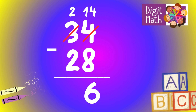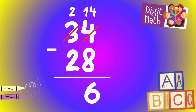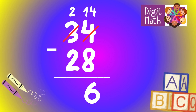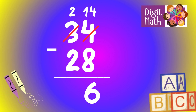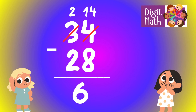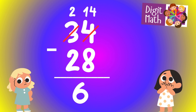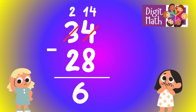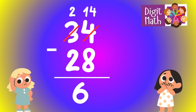In the tens column, we now have 2. Subtract 2 from 2, which equals 0. So the final result is 34 minus 28 equals 6.